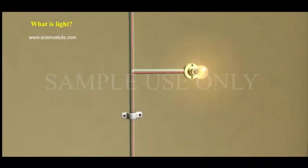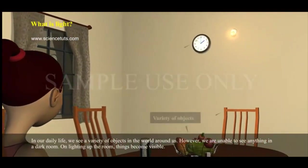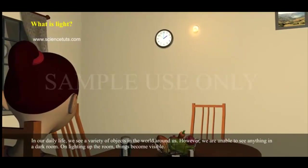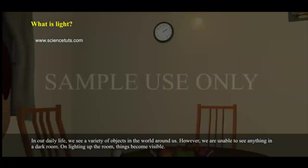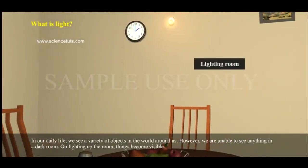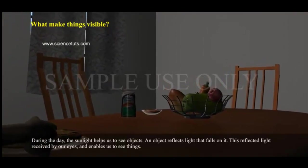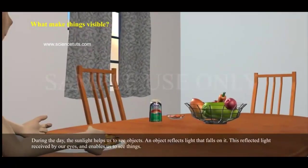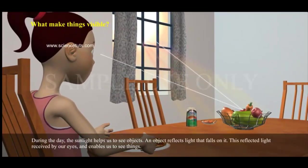Let us discuss about it. In our daily life, we see a variety of objects in the world around us. However, we are unable to see anything in a dark room. On lighting up the room, things become visible. What makes things visible? Also, during the day, the sunlight helps us to see objects. An object reflects light that falls on it. This reflected light is received by our eyes and enables us to see things.